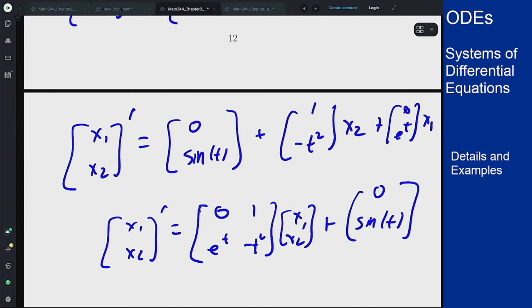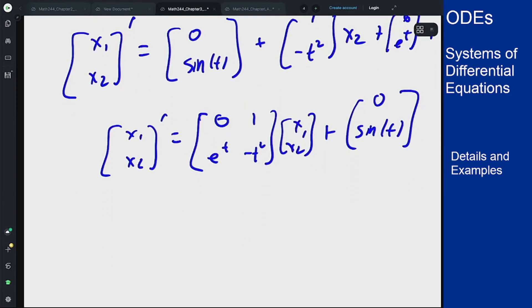And I can replace these by x if I want to write in vector form as x prime is 0, 1 e to the t minus t squared times x, plus our vector 0 sine of t.